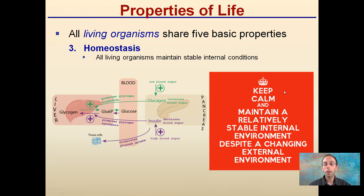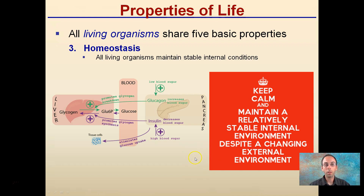All organisms are also able to maintain homeostasis — stable internal conditions despite external changes. For example, blood sugar can increase or decrease, but the body tries to maintain a relatively stable internal environment despite a changing external one, such as walking from a cold air-conditioned room to a hot outdoor environment.